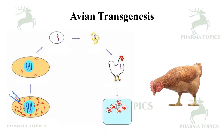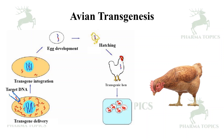In avian transgenesis, the transgene is delivered into embryos. The target DNA is inserted and integrated to form recombinant DNA. The egg develops and hatching occurs. The target hen becomes a transgenic hen, and the desired protein encoded by the implanted target gene is produced. This is avian transgenesis.